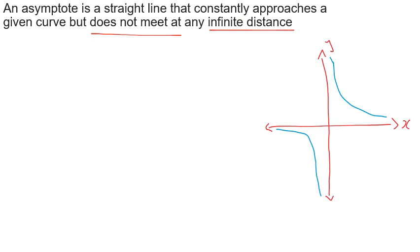We're going to start with horizontal asymptotes. This is where as x gets larger, y approaches zero. We can see with our top right hyperbola that as the values of x get larger, it approaches the x-axis where y equals zero. But by the definition of the asymptote, our rectangular hyperbola and our x-axis will never meet. So we can write: as x approaches infinity, y approaches zero.